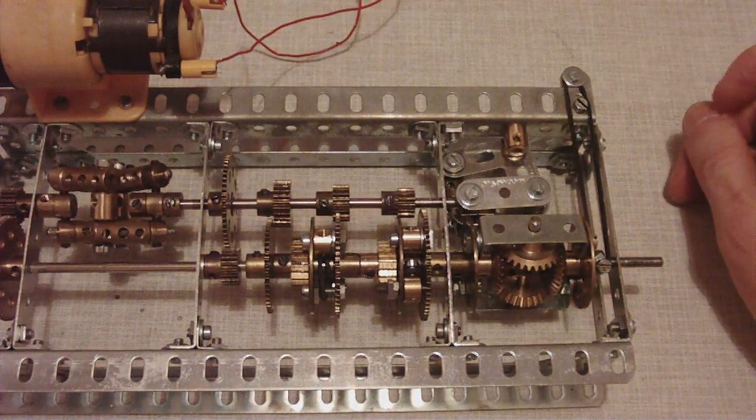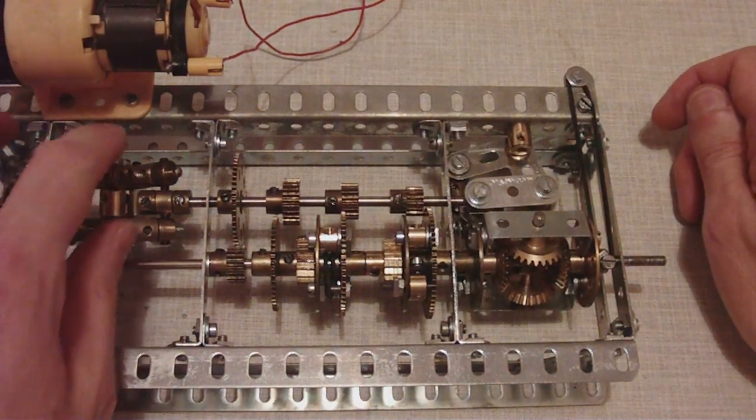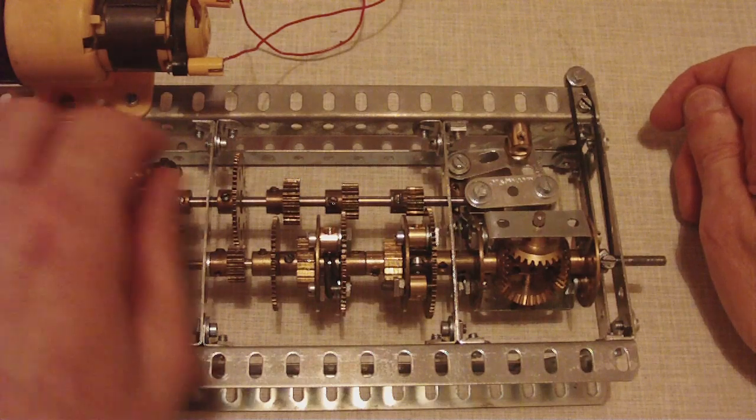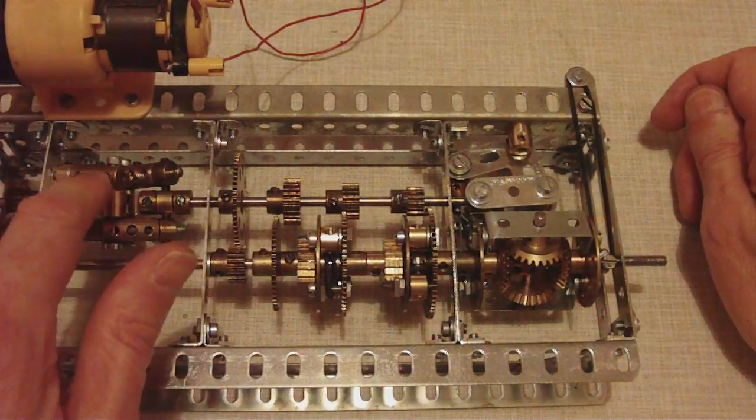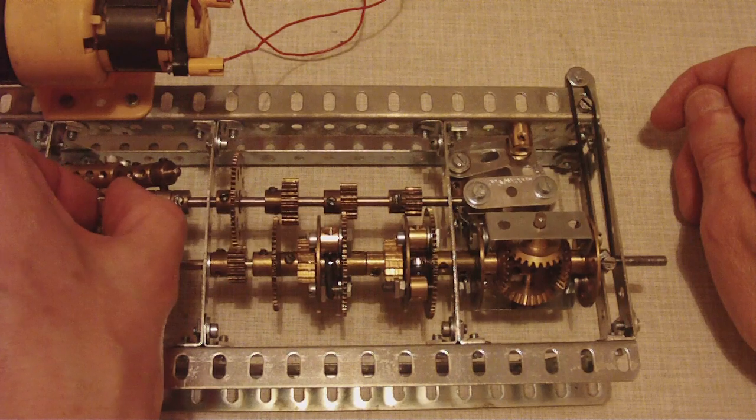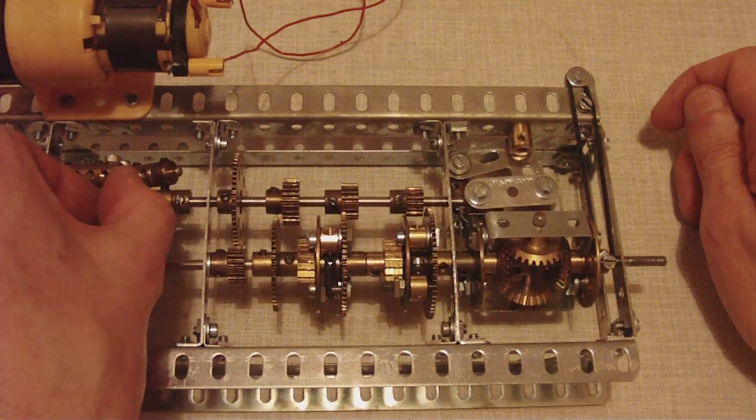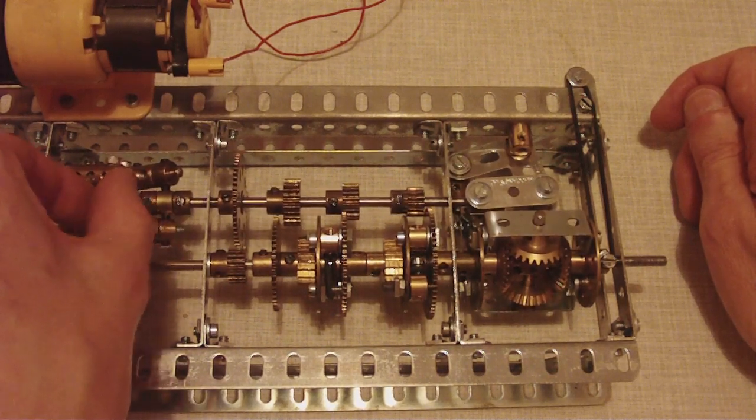So how does all that work? This governor here moves the shaft to the left when this is spinning faster and faster. Because it's weighted it tries to go outward with centrifugal force.